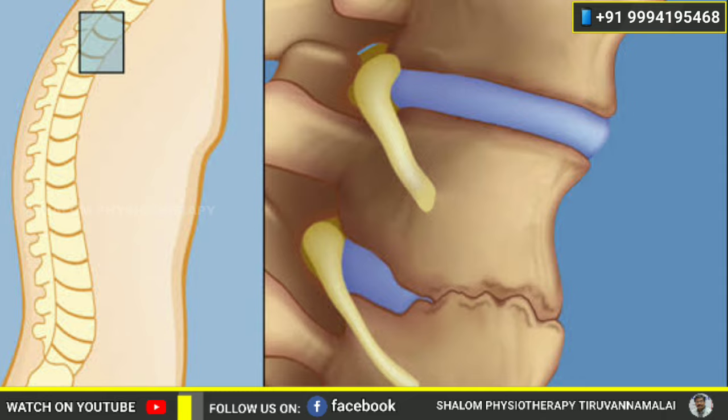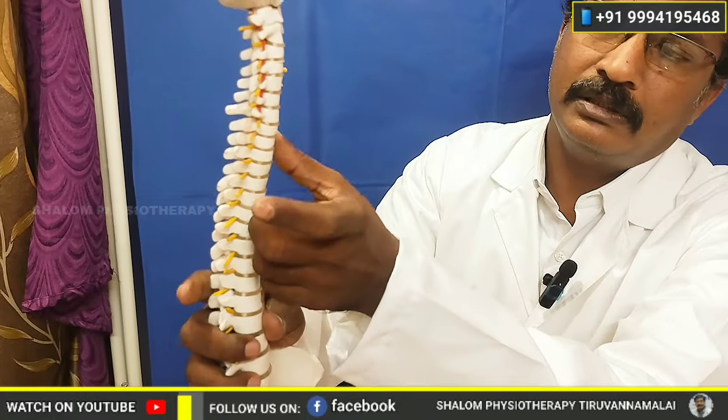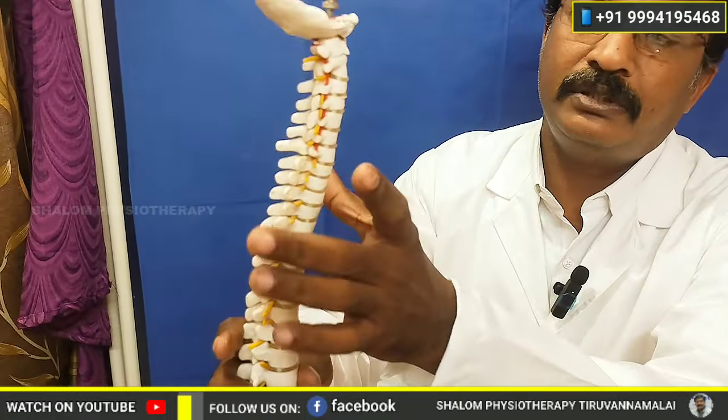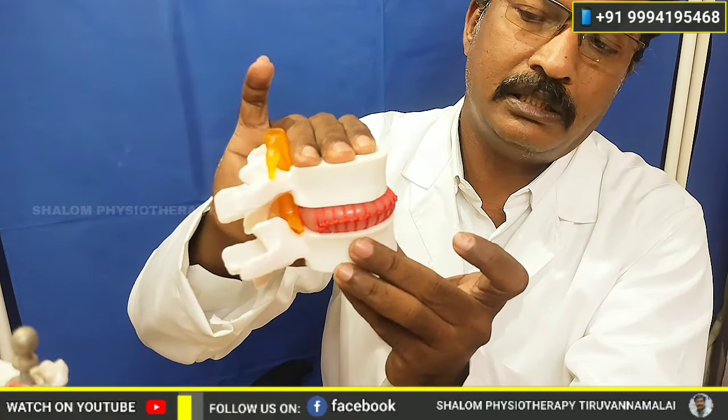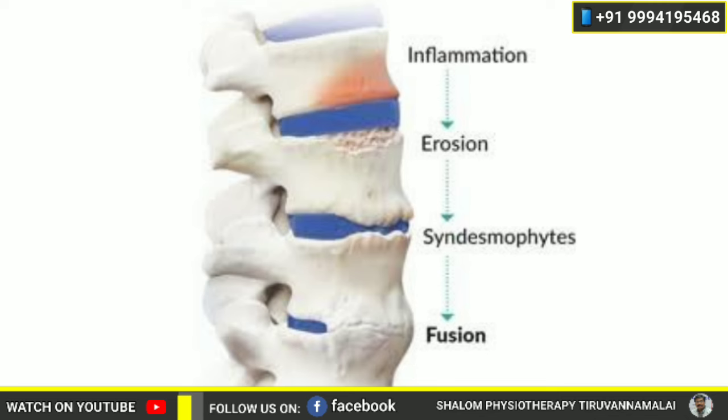Why does the chest expansion test matter? In Ankylosing Spondylitis, the intervertebral discs of the thoracic spine fuse, and since the ribs are attached to these discs, the lubrication and movement are restricted. That's why chest expansion is reduced and must be measured.